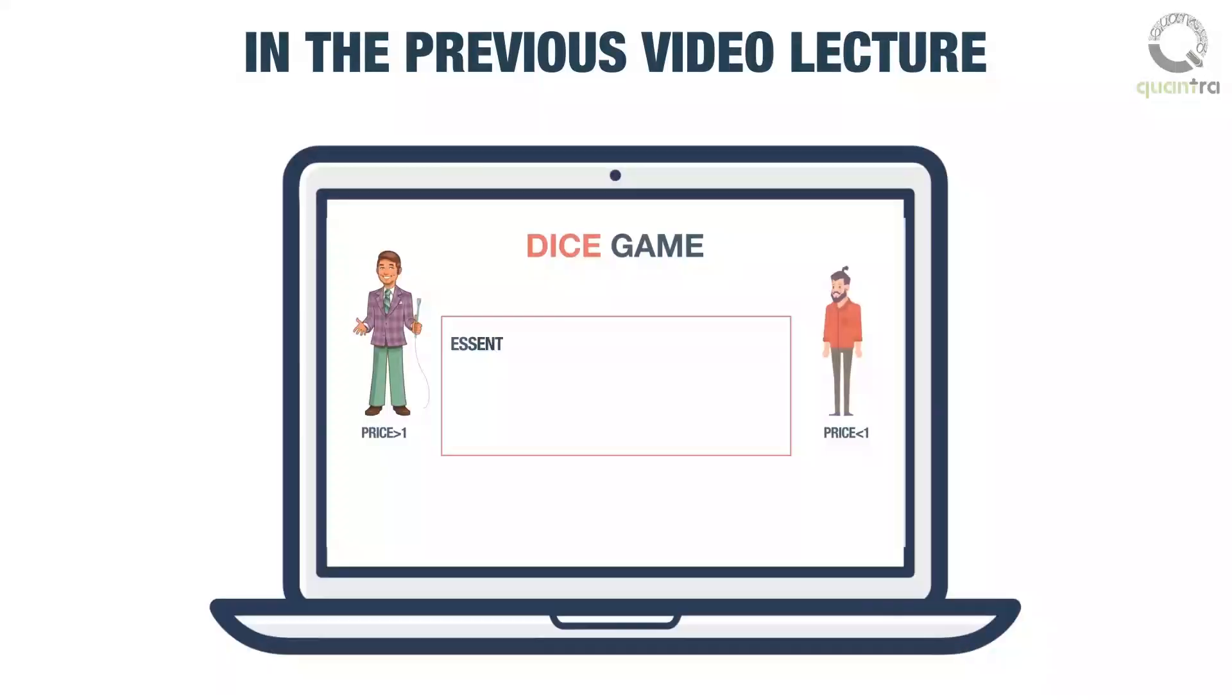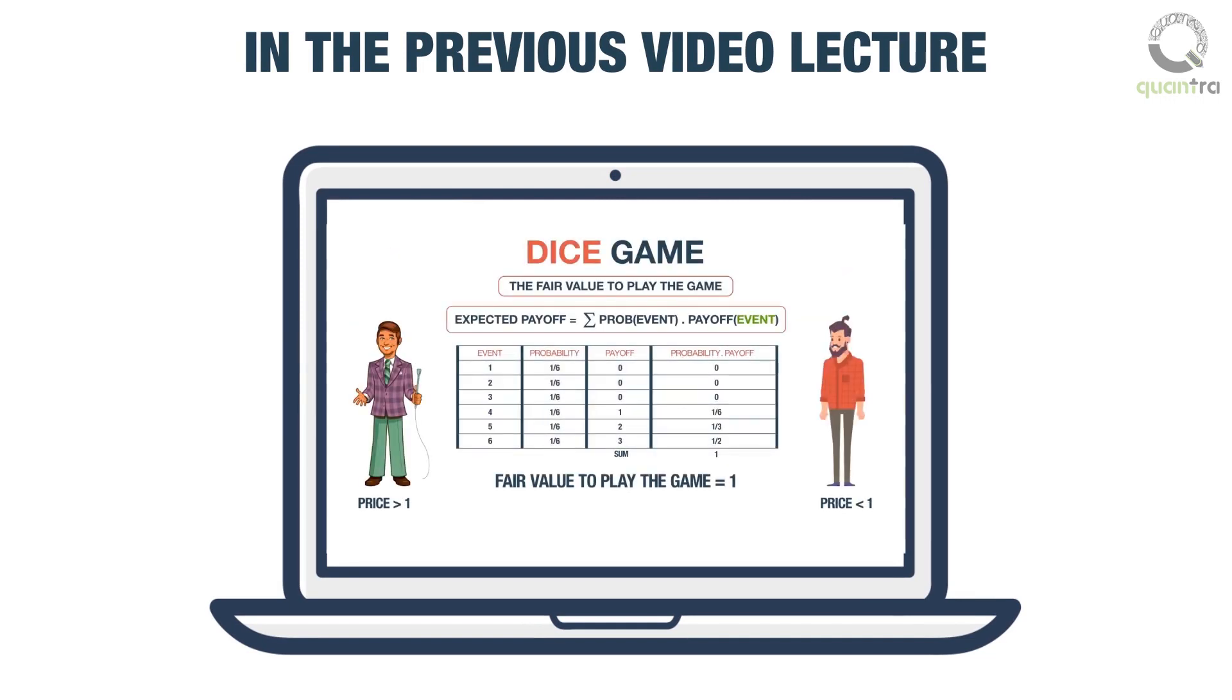In the previous video lecture, we looked at an analogy to pricing options through a dice game. We computed the expected payoff of the game and concluded that the fair price of playing the game should be equal to the expected payoff.